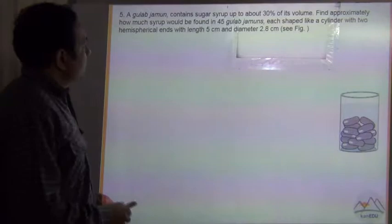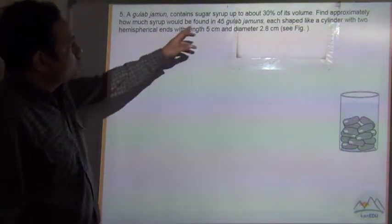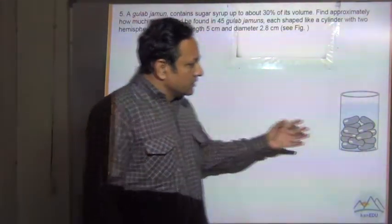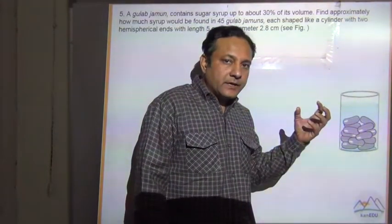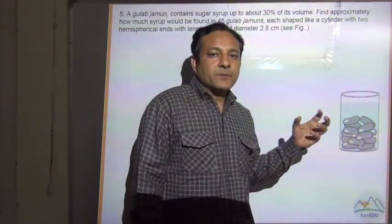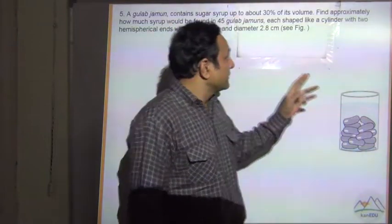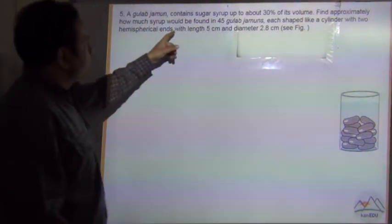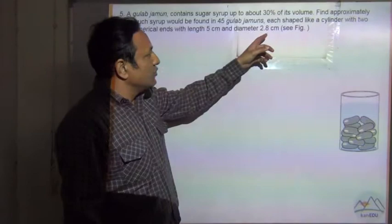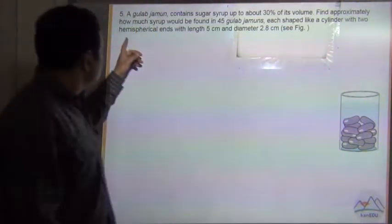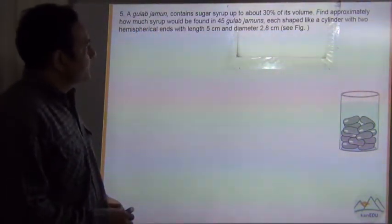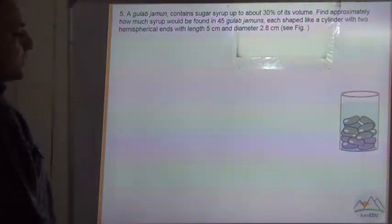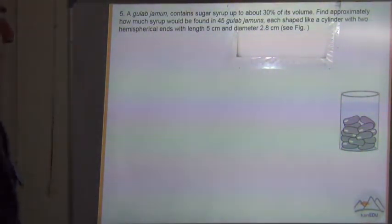Question number 5. A gulab jamun contains sugar syrup of about 30% of its volume. So whatever is the volume of the gulab jamun, 30% of that volume is sugar syrup. Find approximately how much syrup would be found in 45 gulab jamuns, each shaped like a cylinder with 2 hemispherical ends, with length 5 cm and diameter 2.8 cm.